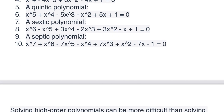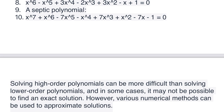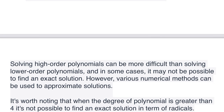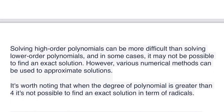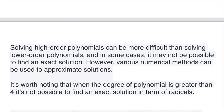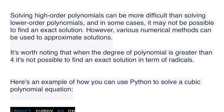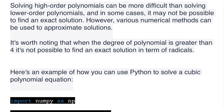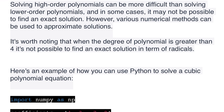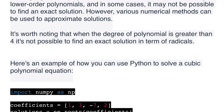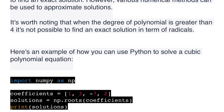Solving high order polynomials can be more difficult than solving lower order polynomials, and in some cases it may not be possible to find an exact solution. However, various numerical methods can be used to approximate solutions. It's worth noting that when the degree of a polynomial is greater than 4, it's not possible to find an exact solution in terms of radicals.